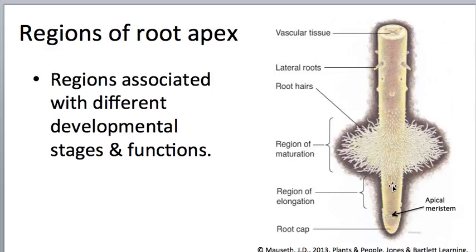Within this region the cells are still small. Just above that is the region of elongation, where the newly added small cells, as the name implies, elongate. As they become bigger, that pushes the root downwards further into the soil. Above the region of elongation is the region of maturation, where cells around the epidermis have root hairs. Root hairs are projections of the epidermis that increase the surface area and therefore the ability of the root to absorb water and minerals.